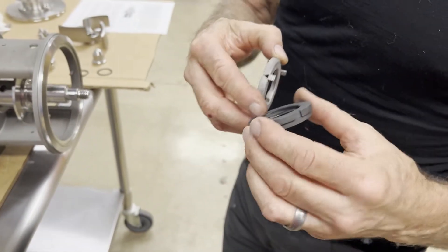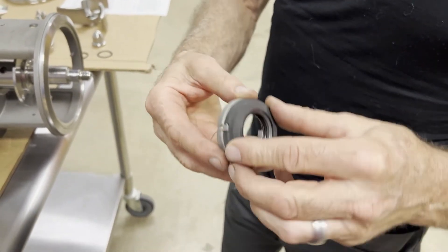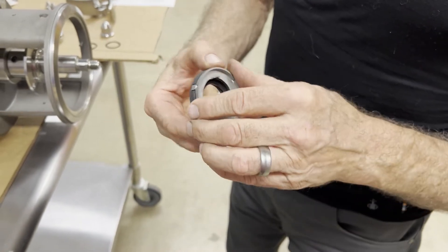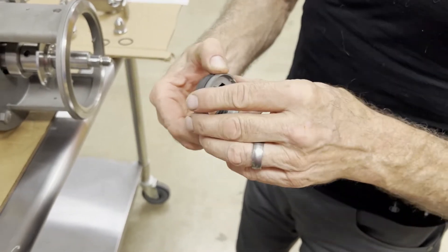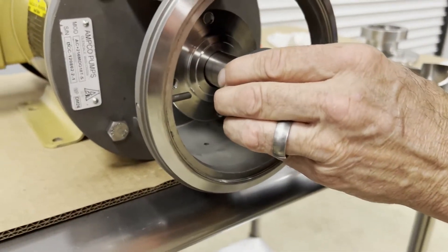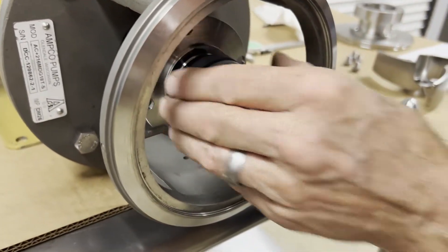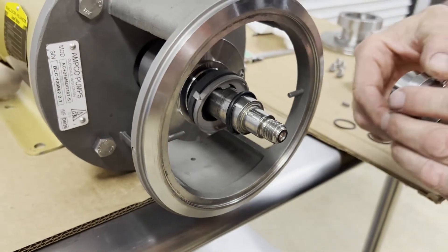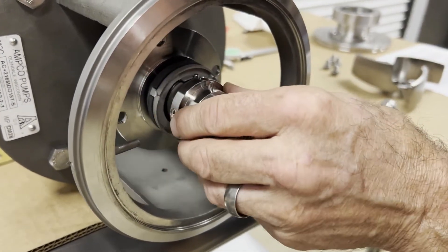This gets a cup. You notice on this cup that there's a drive tab. We're going to load this onto the shaft, and I'm going to use our drive collar to help seat that O-ring in.